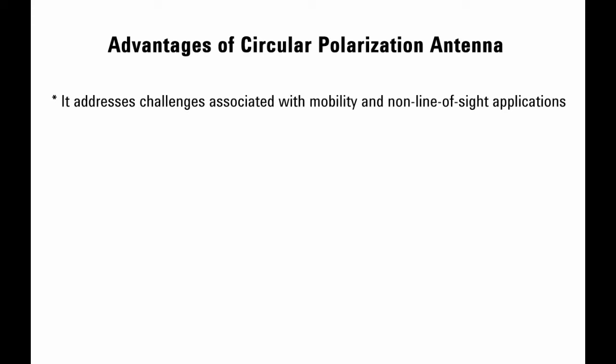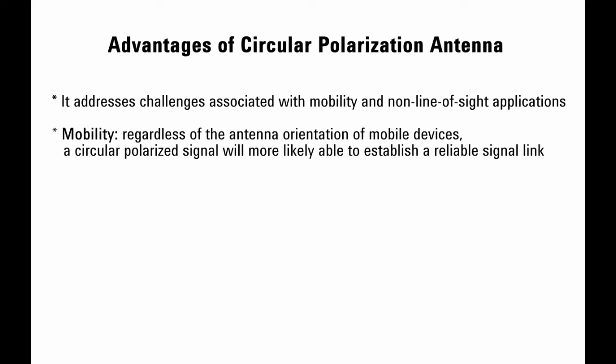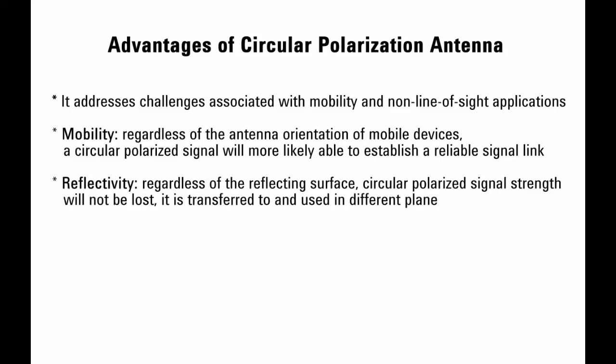Due to signal propagation properties, circular polarization antenna technology offers numerous performance advantages over linear polarization. It is able to address challenges associated with mobility and non-line-of-sight applications. Mobile devices generally use linearly polarized antennas, so the orientation of the signal depends on how the device is held, leading to cross-polarization issues. A circular polarized transmitting antenna transmits in all planes, making it more likely that a mobile device can establish a reliable signal link regardless of the antenna orientation. Similarly, if a reflecting surface does not reflect the signal in the same plane, circular polarized antennas transmitting in all planes increase the likelihood of a usable signal.